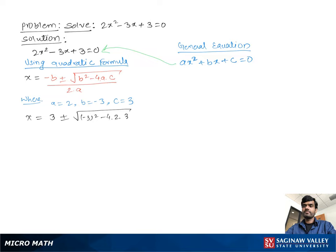we get x equal to negative b — and since b is negative 3, negative b becomes positive 3 — plus or minus square root of negative 3 squared minus 4 times 2 times 3, over 2 times 2. Then, we have 3 plus or minus square root of 9 minus 24, over 4.